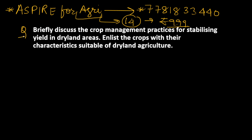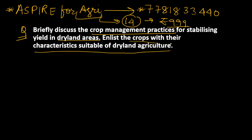So let's start the answer writing practice now. Today's question is: briefly discuss the crop management practices for stabilizing yield in dryland areas. In the second part, we have to enlist crops with their characteristics suitable for dryland agriculture.